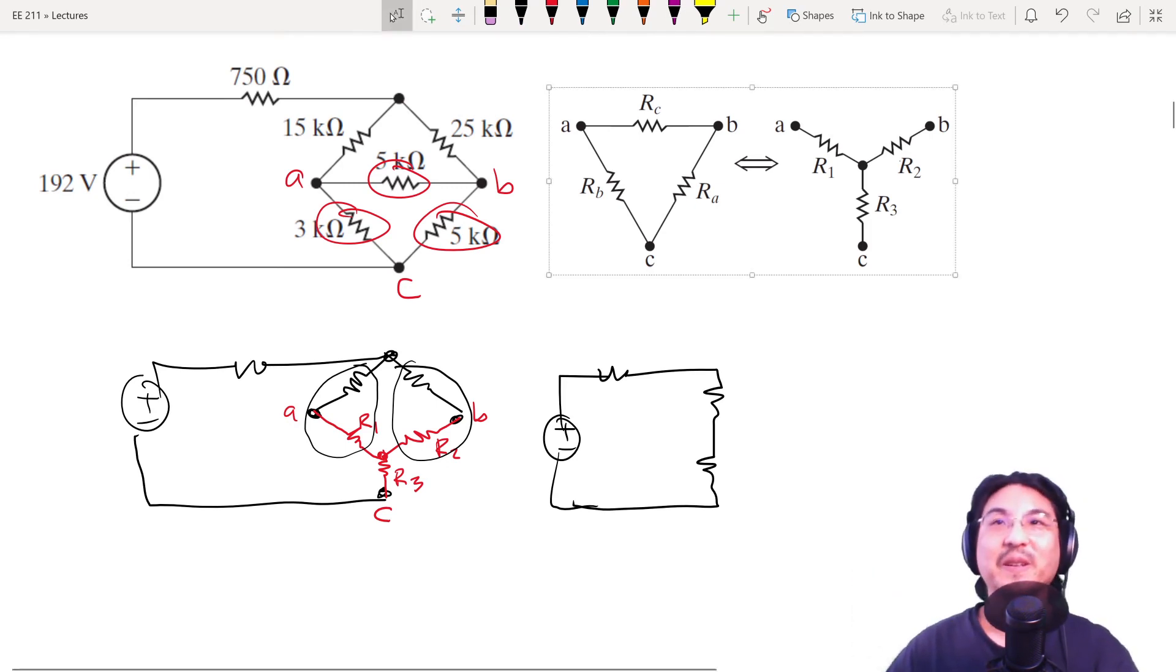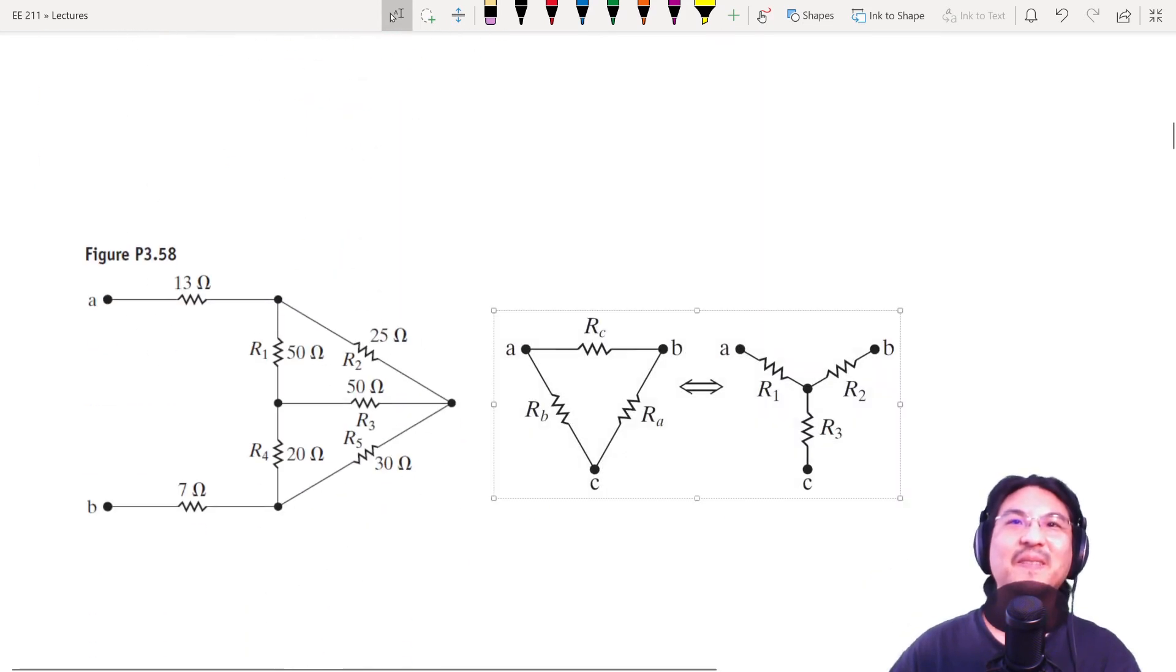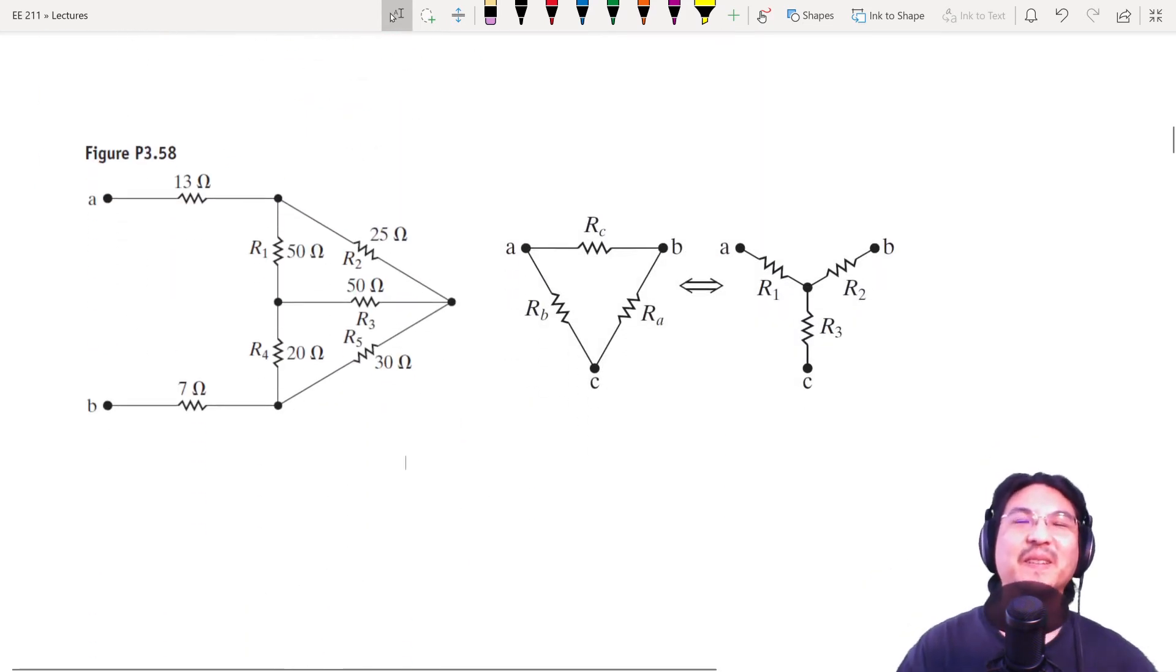Okay, let's try another one. I'm gonna drag this down. Okay, here, do you see any delta or Y? There's maybe a couple of them, right? Because, like, this looks like a Y, or like, this looks like a delta, or this looks like a delta. So we have a few possibilities, right? So there's more than one way to do it, for sure.